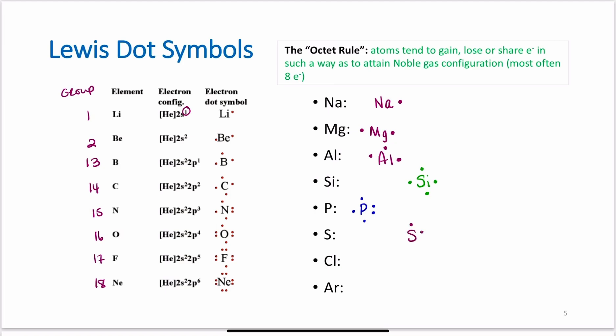Sulfur, six valence electrons, one, two, three, four, five, six. I'm now pairing them up because I have to. And again, you can pair them up on the sides, whatever way makes more sense to your brain, as long as you have them only paired up when they have to be. Chlorine, seven valence electrons, one, two, three, four, five, six, and seven. And argon, eight valence electrons. One, two, three, four, five, six, seven, and eight.